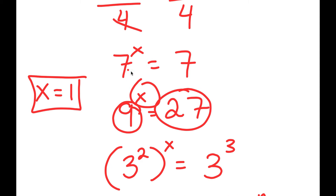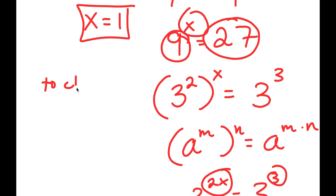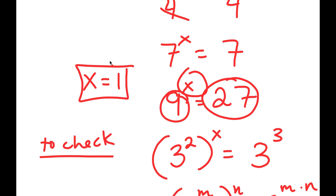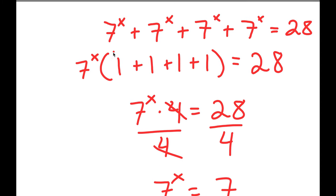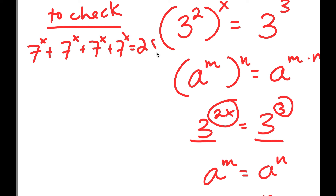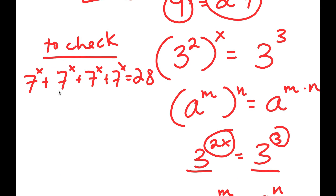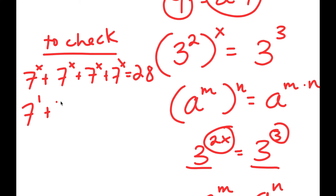Now going back to this problem, we got x equals 1. So now to check — and it's very important to always check your answer in an equation because you may have gotten it wrong — my equation was 7 to the power of x plus 7 to the power of x plus 7 to the power of x plus 7 to the power of x is equal to 28. We got that x equals 1, so if I plug in 1, I get 7 to the power of 1 plus 7 to the power of 1 plus 7 to the power of 1 plus 7 to the power of 1 is equal to 28.